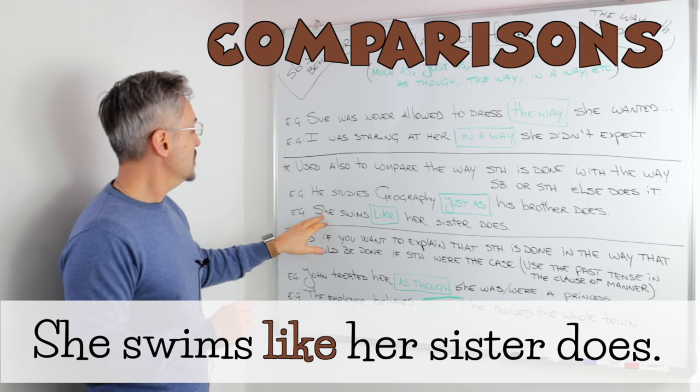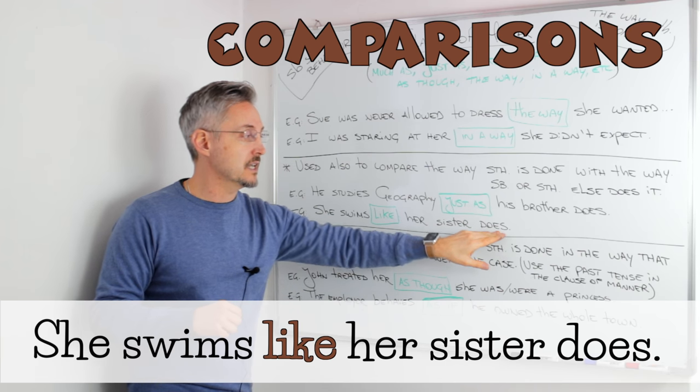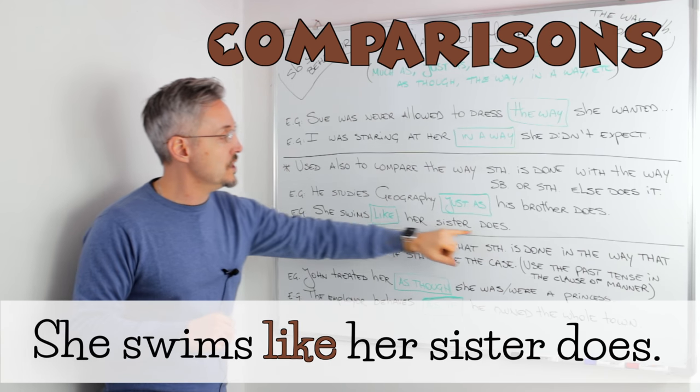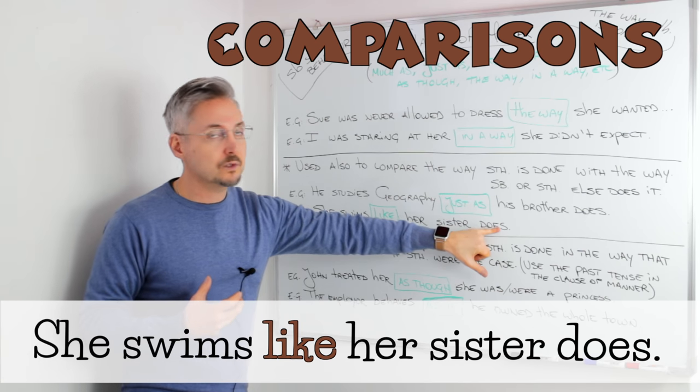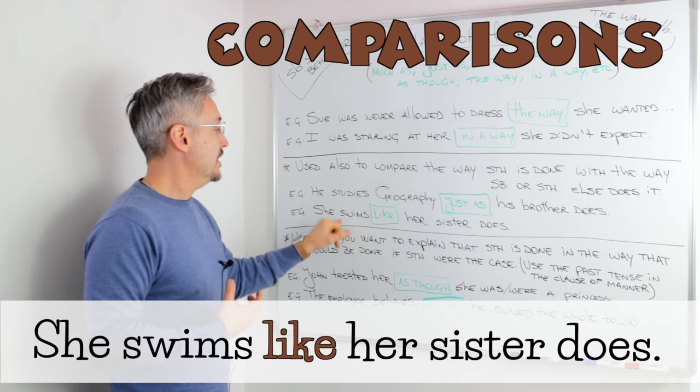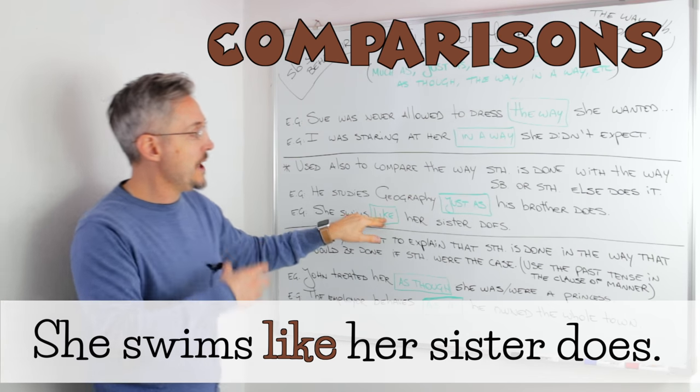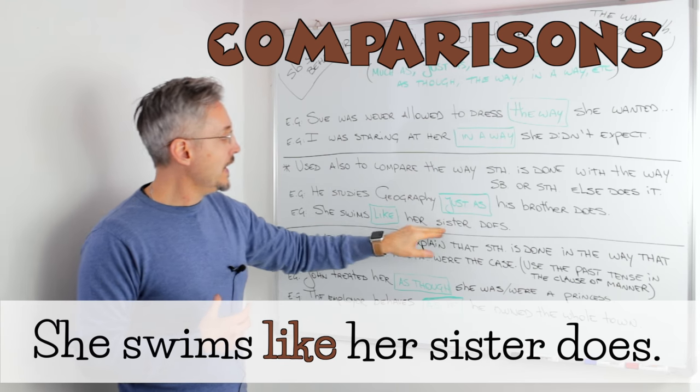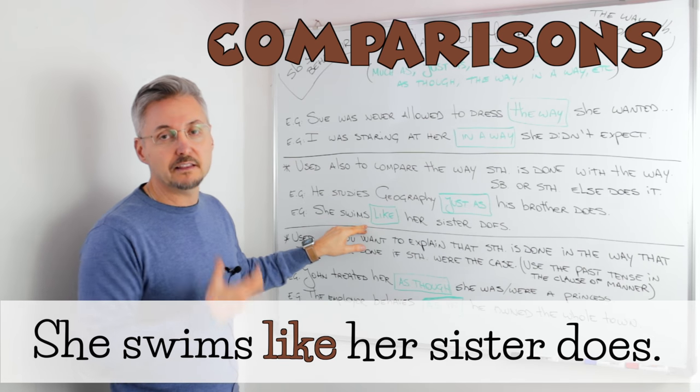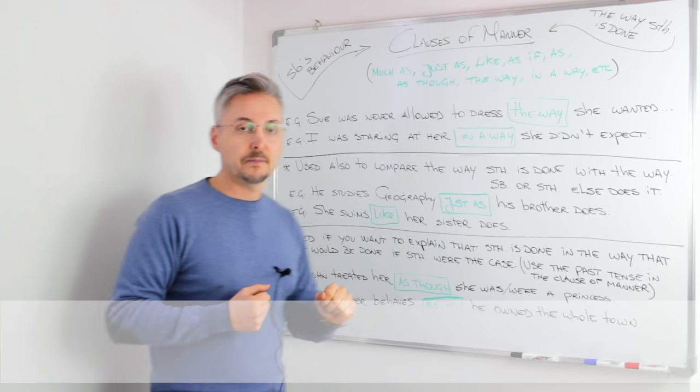Another example, she swims like her sister does. The same thing here. We don't need to repeat the main verb, swim, so we use the auxiliary of that sentence. So, she swims like, is comparing two people in this case, and the way something is done.